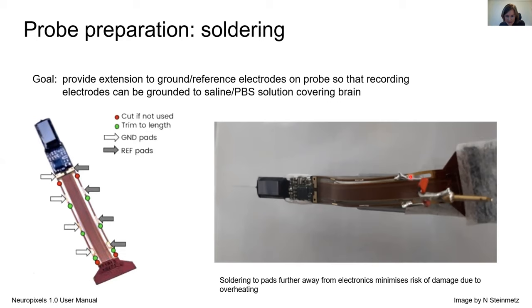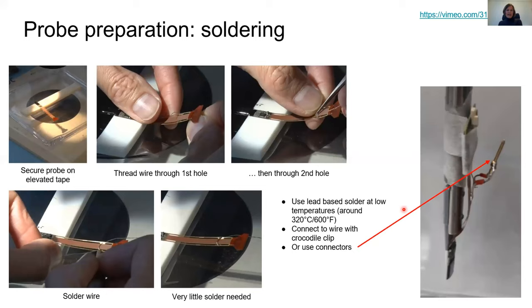Here you can see how this was done. We use those topmost patches. So how to do the soldering, there are very nice videos. You first want to secure your probe, for example on an elevated tape. You take your wire, put it through the first hole on one side, then through the second hole on the other side. Then you solder the wire to both patches and very little solder is needed. You should use lead-based solder because this can operate at low temperatures.